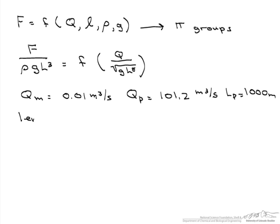We are asked what is the length scale — in other words, what is the length of the model relative to that of the prototype. In order to determine that, we need to find the length of the model. Looking at our two pi groups with the information given, we realize we will need to use our second pi group.